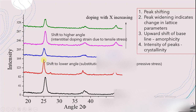In addition to peak shifting, we can also see a widening of the peaks after doping. This widening occurs because of the change in the lattice parameter in the crystal lattice due to the incorporation of the dopant ion.